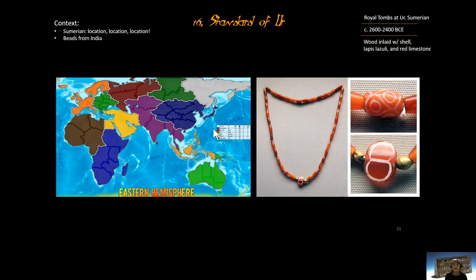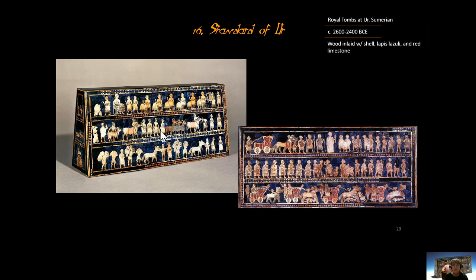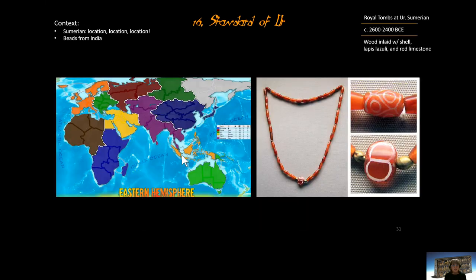On the Standard of Ur, we have a piece made of wood but inlaid with shell, which would be from the seacoast, and then lapis lazuli — a blue rock — from east of the city of Ur, and red limestone from the India region. So, a lot of competition and lots of trade.